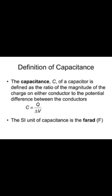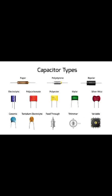The capacitance is the ratio of the magnitude of charge on a conductor to the potential difference between the two conductors. The unit of capacitance is the Farad. There are different types of capacitor, including electrolytic, ceramic, and tantalum types, which are used in different fields.